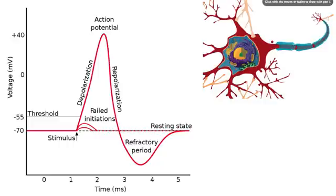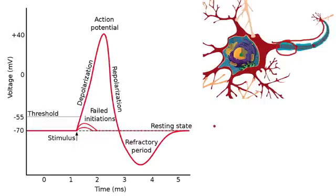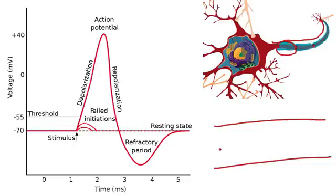So that's this region here — it starts here and goes to about there. What I'm going to do is take a section of the neuron and draw it down here. So here we have the axon. This is inside the axon and this is outside the axon.